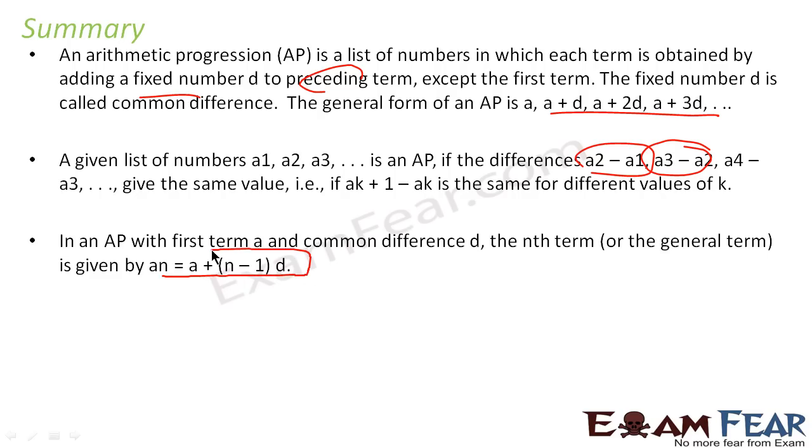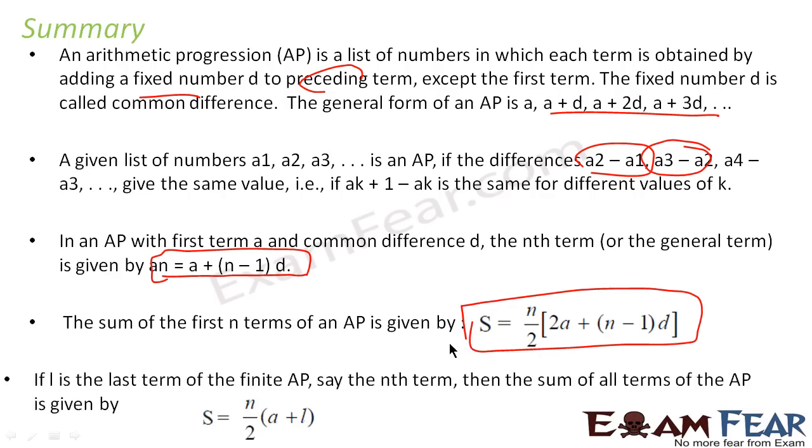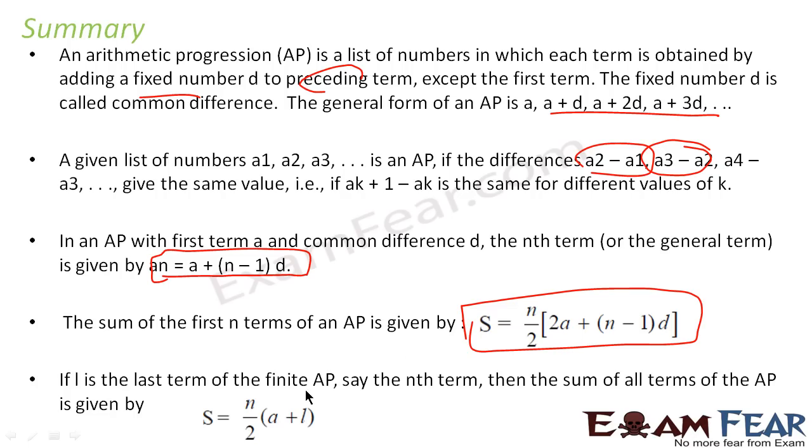The nth term of AP is A_n = a + (n-1)d. The sum of first n terms of AP is n/2 times (2a + (n-1)d), it's a very crucial formula. Also, if you know the last term and first term, the sum is also n/2 times (a + l).